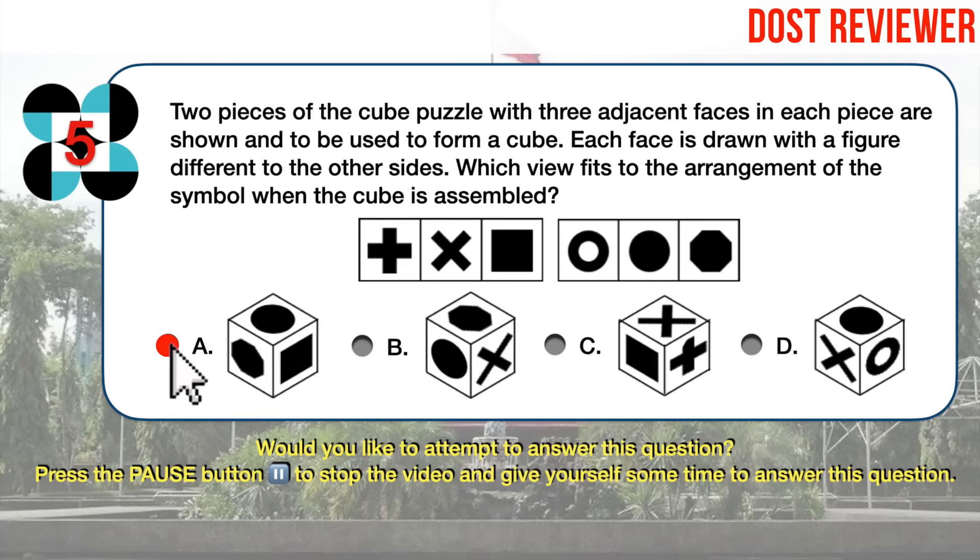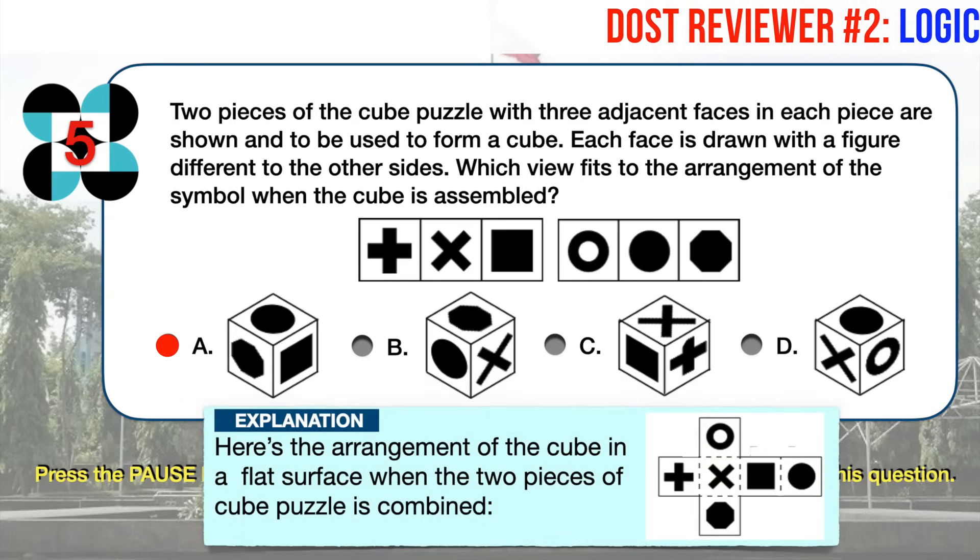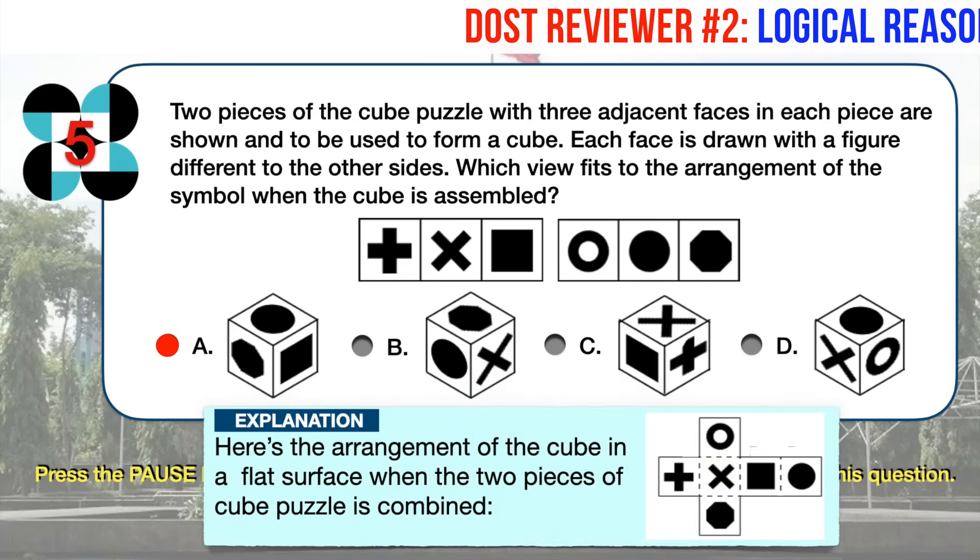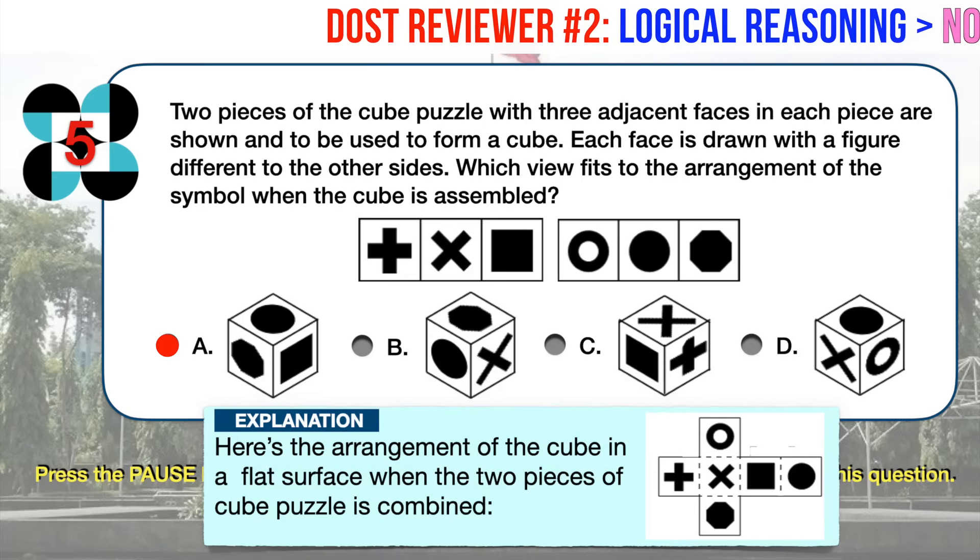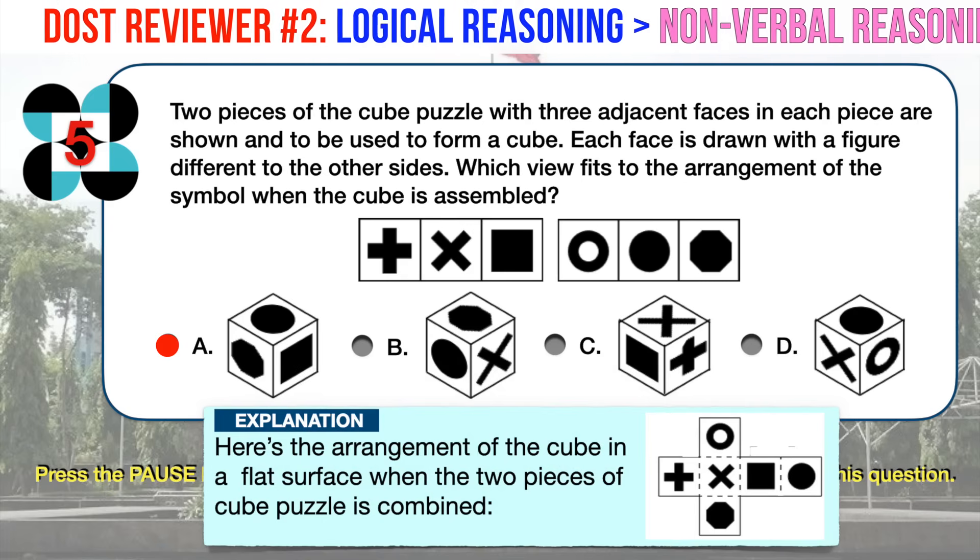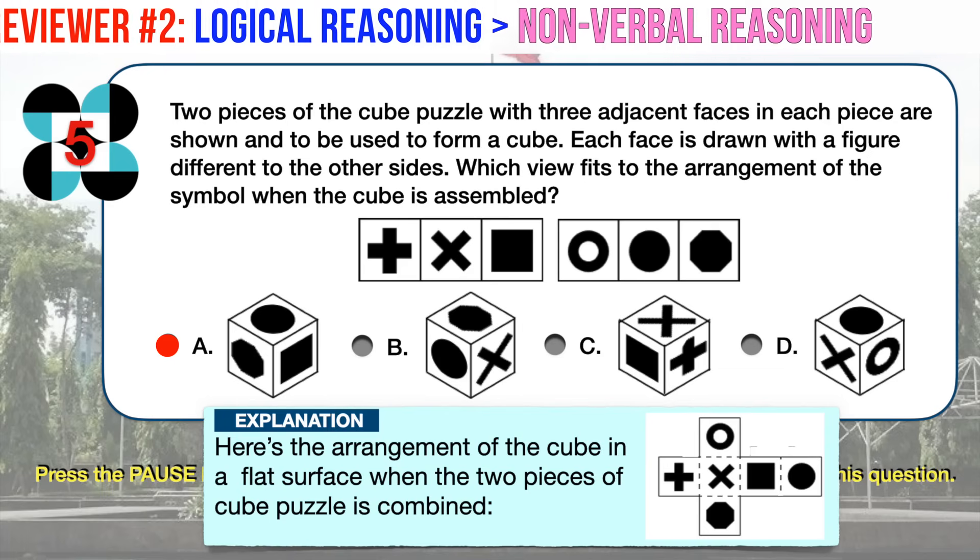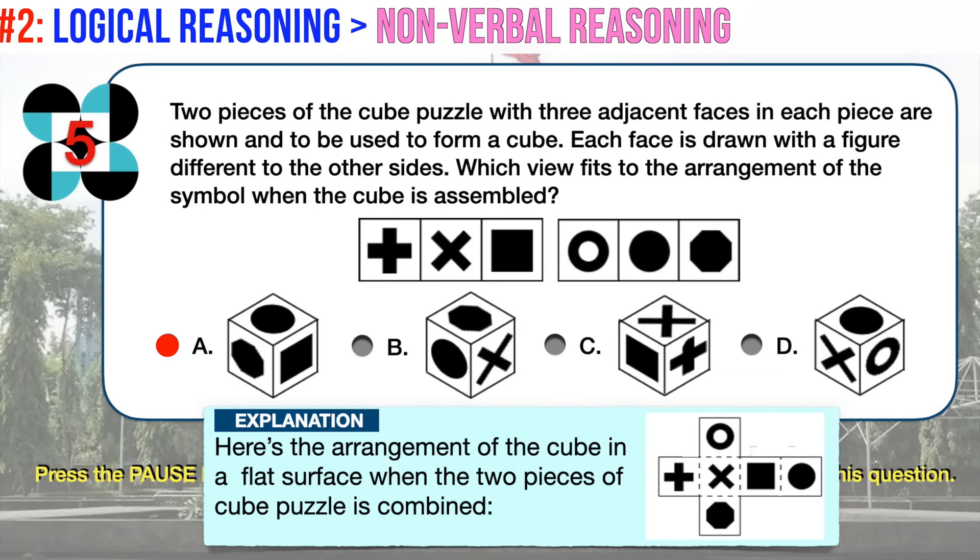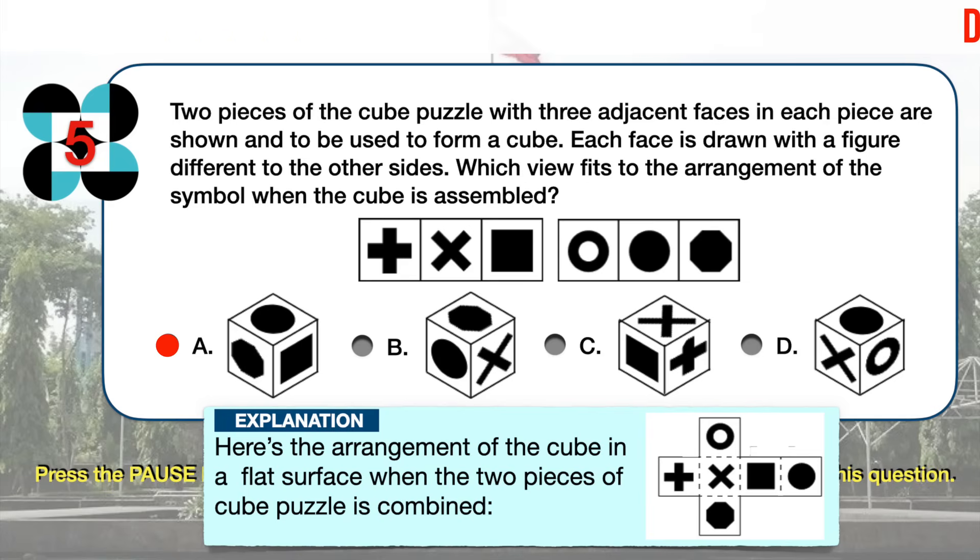The correct answer is A. Here's the arrangement of the cube in a flat surface when the two pieces of cube puzzle are combined. Now let's try to form the cube by folding at the edges of the adjoining faces, as marked by the broken lines. With the face with X mark at the bottom, let's fold all its four adjoining faces upwards. We then complete the cube by folding the face with the shaded circle to be on top of the cube.